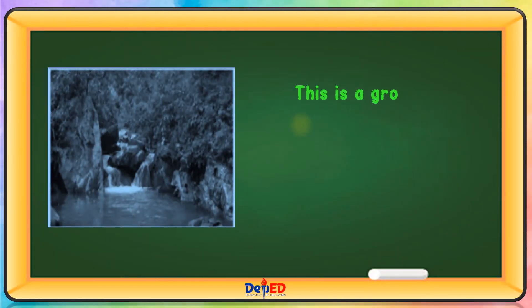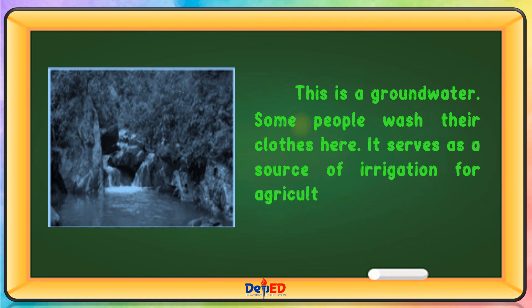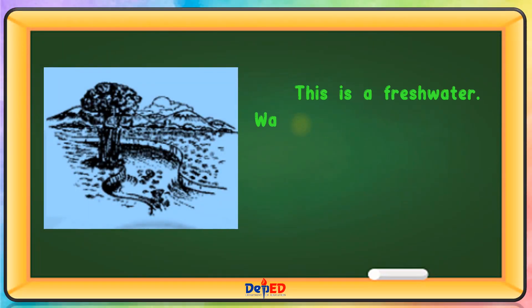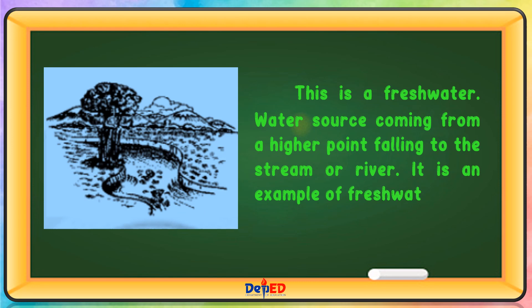This is ground water. Some people wash their clothes here. It serves as a source of irrigation for agricultural lands. This is fresh water. Water source coming from a higher point falling to the stream or river. It is an example of fresh water that comes from the mountain.